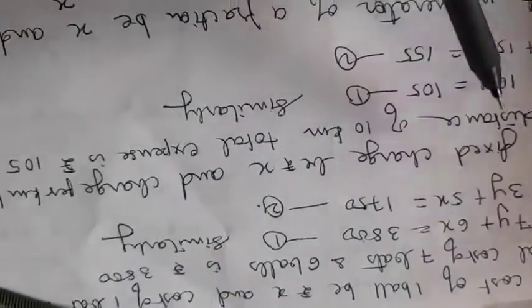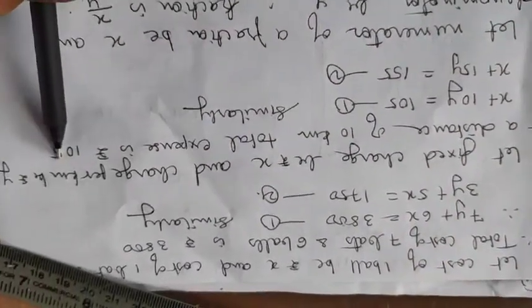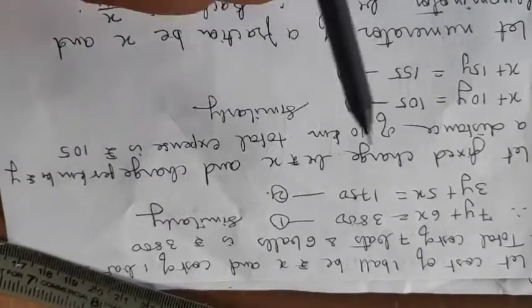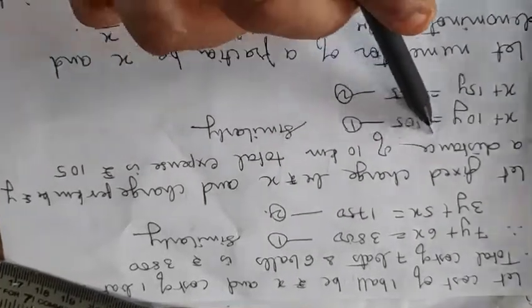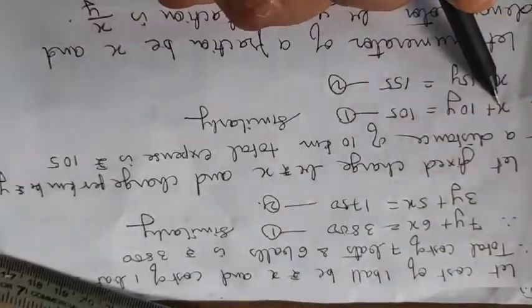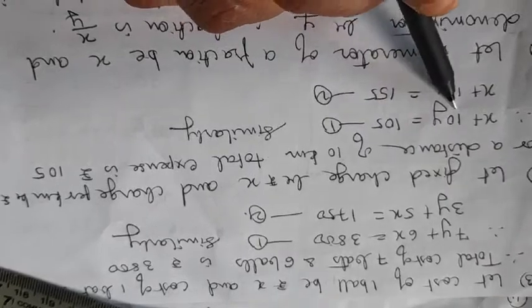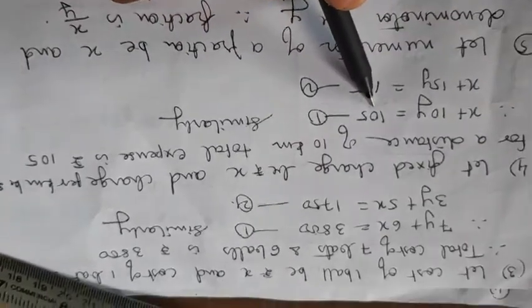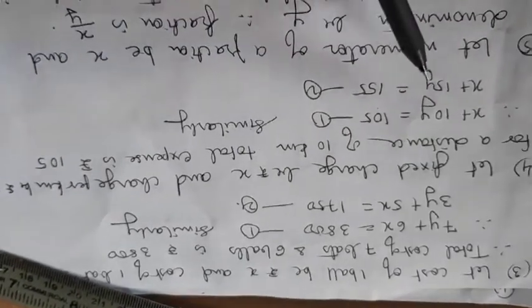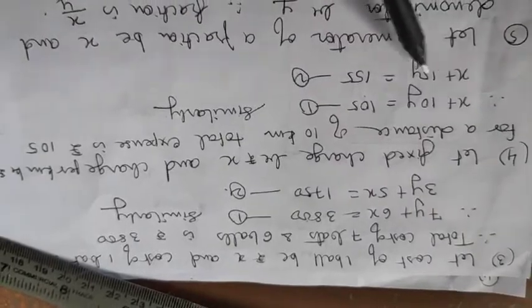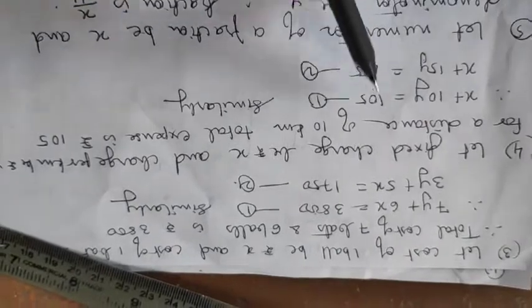Come on. Here you will say let the fixed charge be Rs.x. And let the charge per km be Rs.y. So if you are travelling a distance of 10 km and the expense is 105, you will write 105 amount where partly is fixed x and partly based on the 10 km. So y is for 1 km. So for 10 km, 10y. So x plus 10y is 105, total cost. Second statement given is for 15 km, 155. So 15 km means 15y will be total amount and x is partly fixed. So x plus 15y will be 155. Again you got two equations.